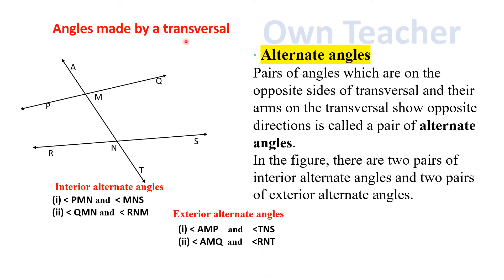Angles made by a Transversal. Now we will see alternate angles. A pair of angles which are on opposite sides of the transversal and whose arms on the transversal show opposite directions is called a pair of alternate angles. In the figure, there are two pairs of interior alternate angles and two pairs of exterior alternate angles.